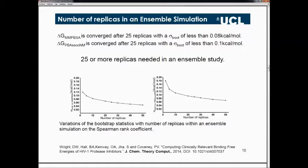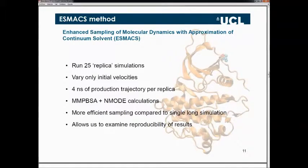After these analyses, the final version of the protocol is what we call ASMAX — Enhanced Sampling Molecular Dynamics with the Approximation of Continuum Solvation. We run 25 replica simulations, 4 nanoseconds each, varying only the initial velocities assigned to the atoms, with all other conditions the same. We take snapshots from each trajectory, perform MMPBSA and normal-mode calculations on each conformation, generate a large dataset, then perform statistical analysis to get the final binding affinity with a contracted error bar. It gives much better, more efficient sampling than a single long simulation, and allows reproducible results.